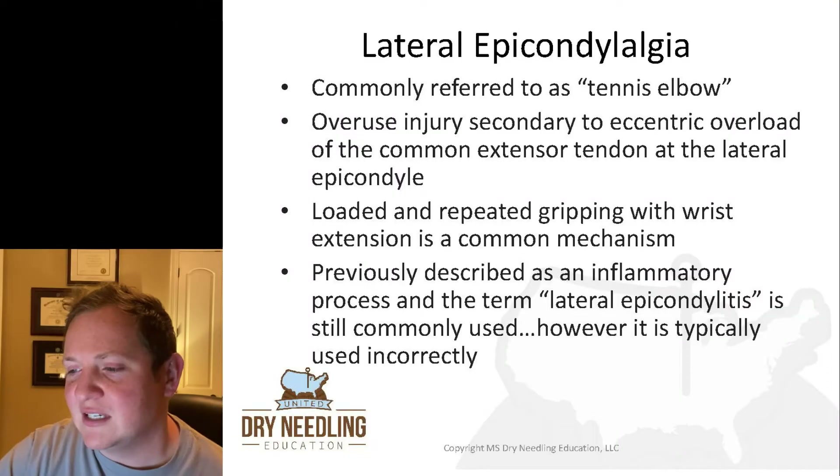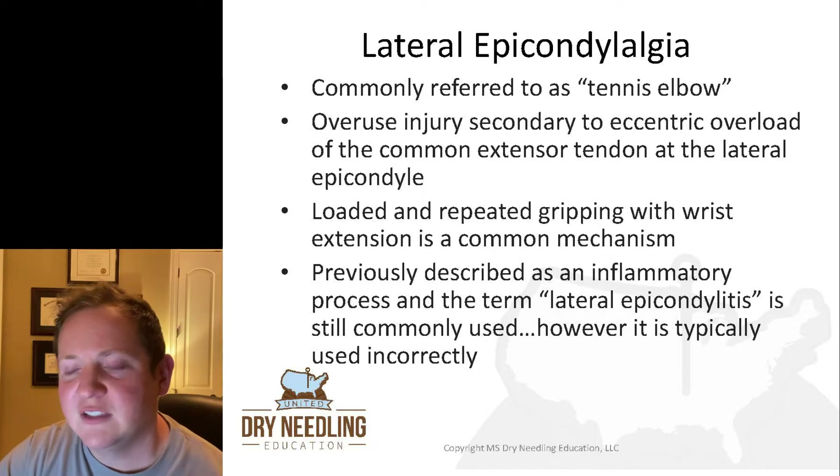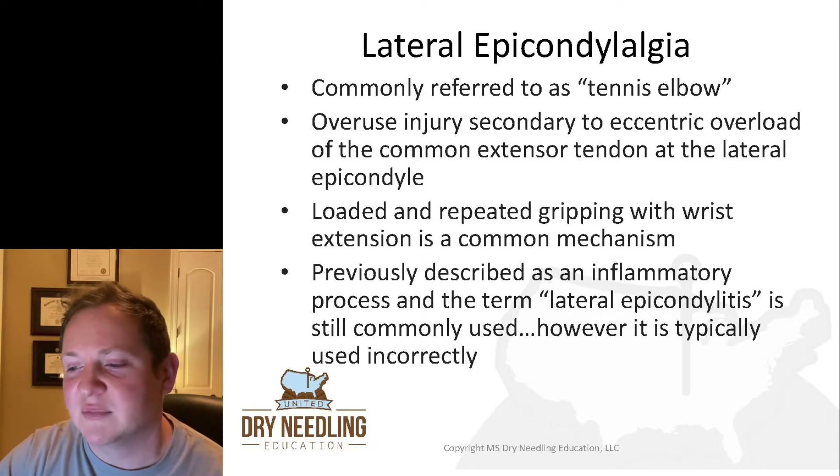Tennis elbow is generally related to an eccentric overload of the common extensor tendon at the lateral epicondyle. You've got your extensor carpi radialis longus, extensor carpi radialis brevis, your extensor digitorum, your extensor digiti minimi, and your extensor carpi ulnaris — all coming off that common extensor origin at the lateral epicondyle. Loaded and repeated gripping, usually with some wrist extension, is one of the most frequent mechanisms.